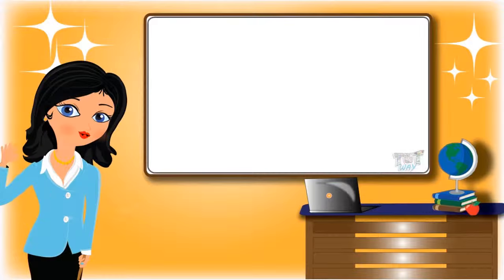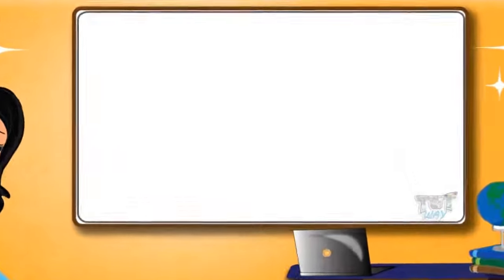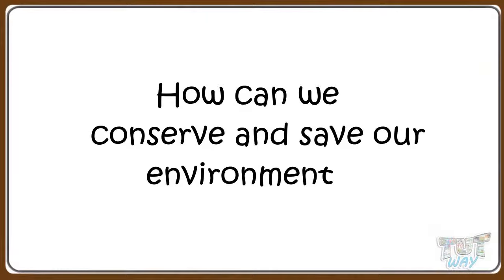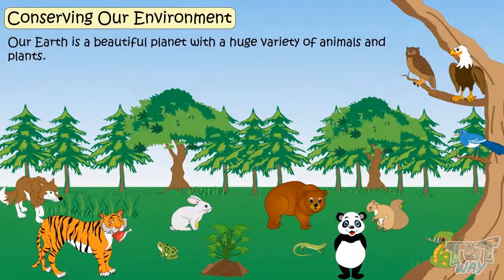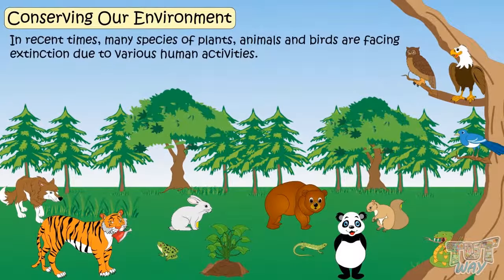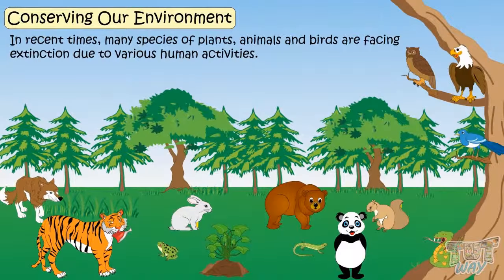Hi kids! Today we will learn how we can conserve and save our environment. Our Earth is a beautiful planet with a huge variety of animals and plants. But in recent times, many species of plants, animals, and birds are facing extinction due to various human activities.